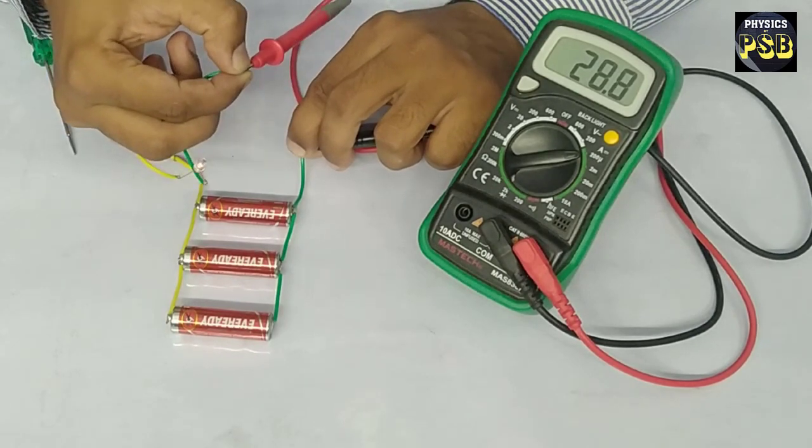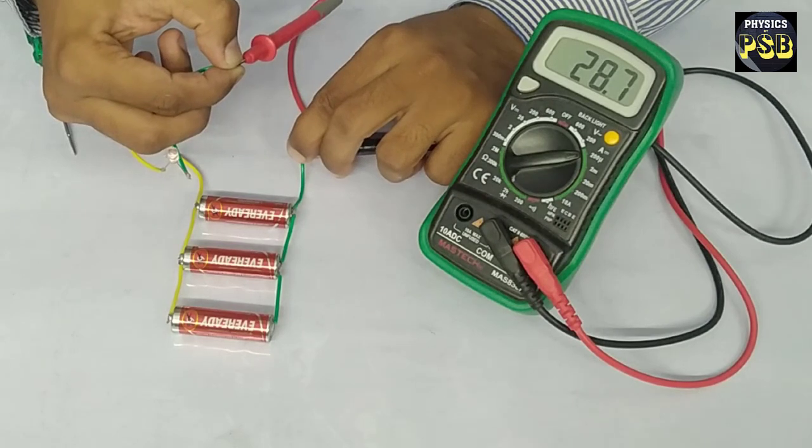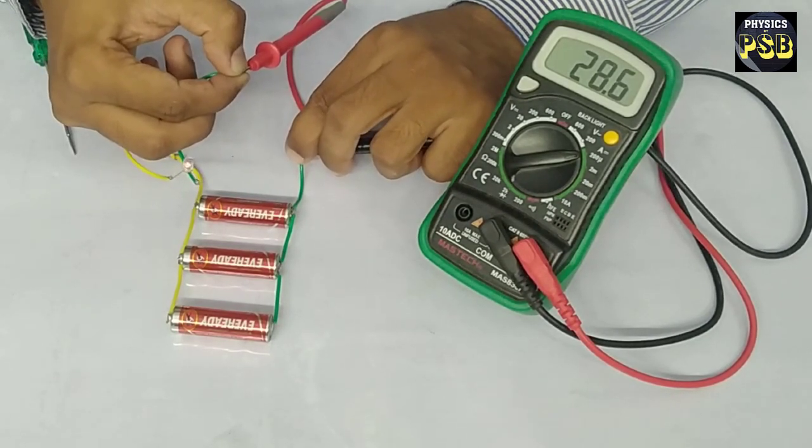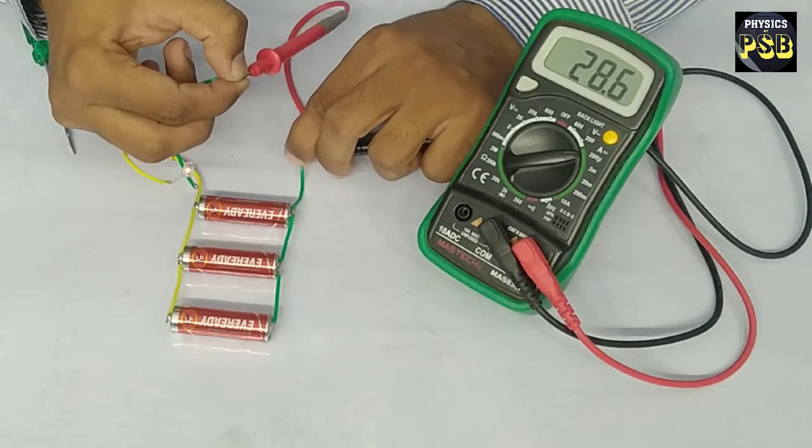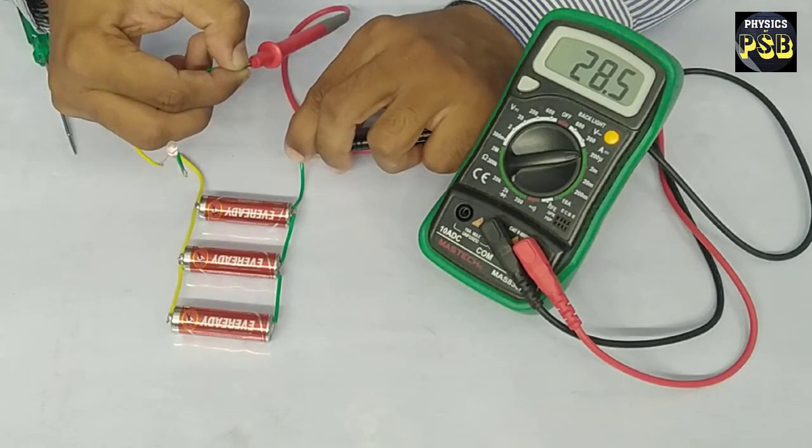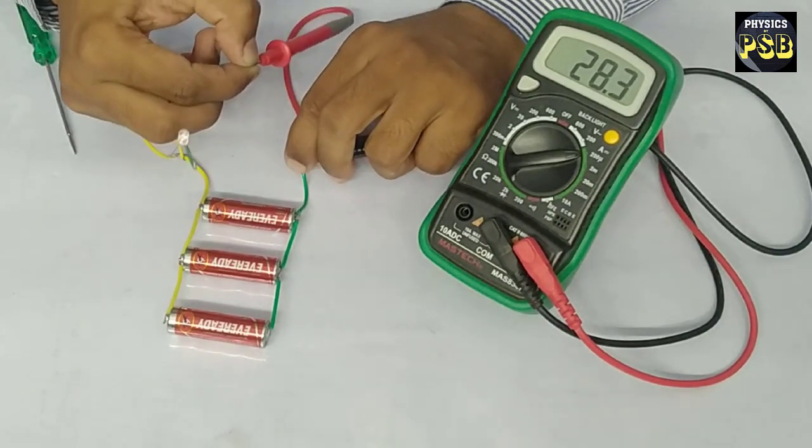I will connect the black probe to the negative terminal of the battery. When I do so, you may observe the LED glow and the multimeter reads the current. It is around 28.6 microampere, so this battery provides approximately 28 microampere current.